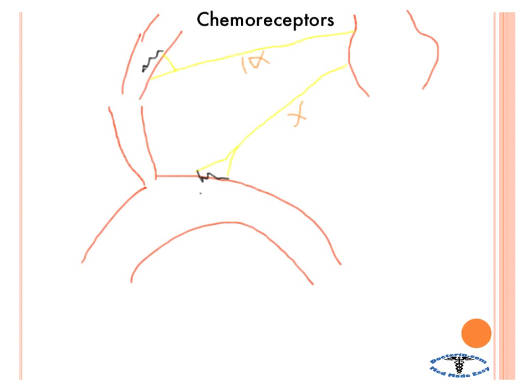Now we're going to talk about chemoreceptors, which do two things in terms of respiration. First, they detect PaCO2, which is the major stimulator of respiratory drive. CO2 crosses the blood-brain barrier, reacts with water to form hydrogen ions and bicarbonate. That lowers the pH, and the central respiratory system recognizes that pH change, triggering an increase in respiration.